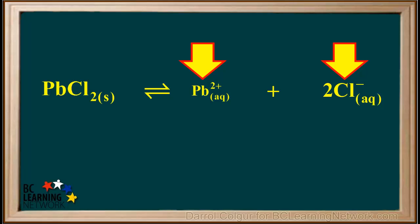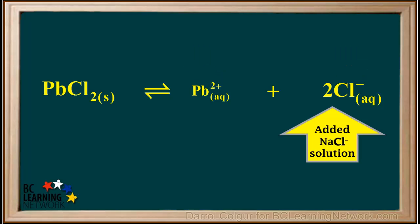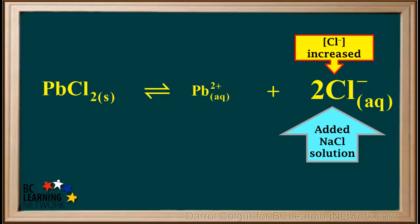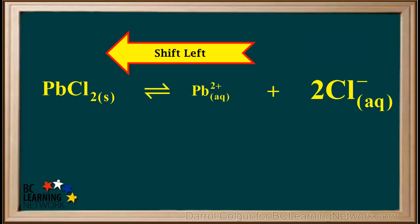We started with only the saturated PbCl₂ solution. Because lead(II) chloride has low solubility, it contains low concentrations of Pb²⁺ and Cl⁻ ions. Next, we started adding aqueous NaCl solution to the saturated PbCl₂ solution. NaCl adds Cl⁻ ions to the saturated solution, which increased the concentration of Cl⁻ ions in the beaker. Le Chatelier's principle tells us this increased concentration of Cl⁻ ions will cause the equilibrium to shift to the left.